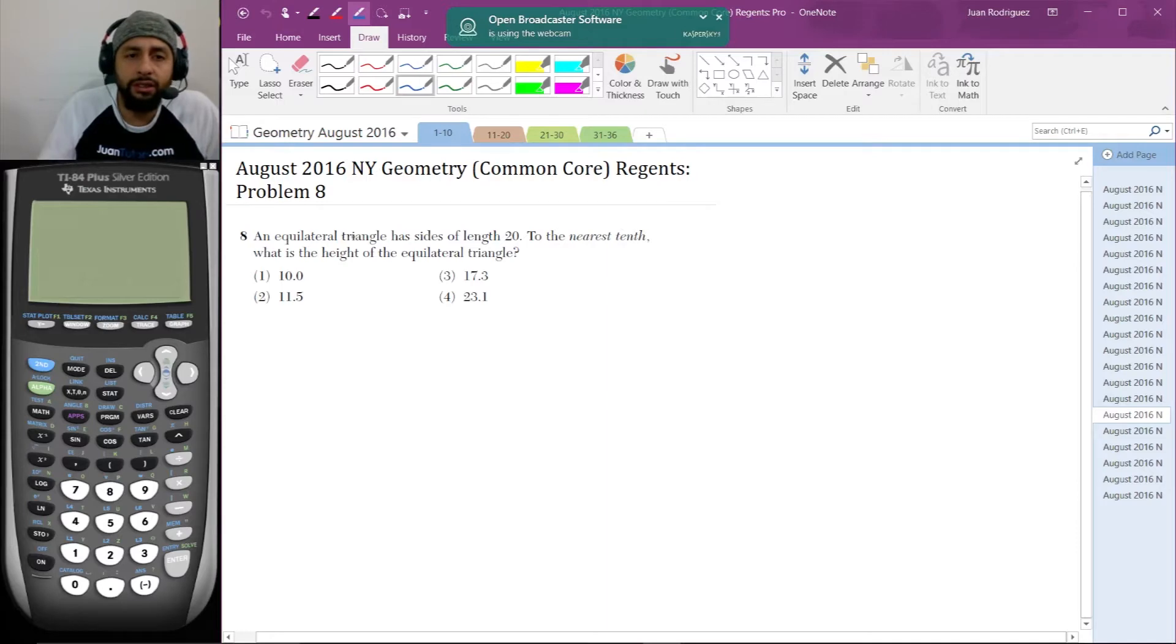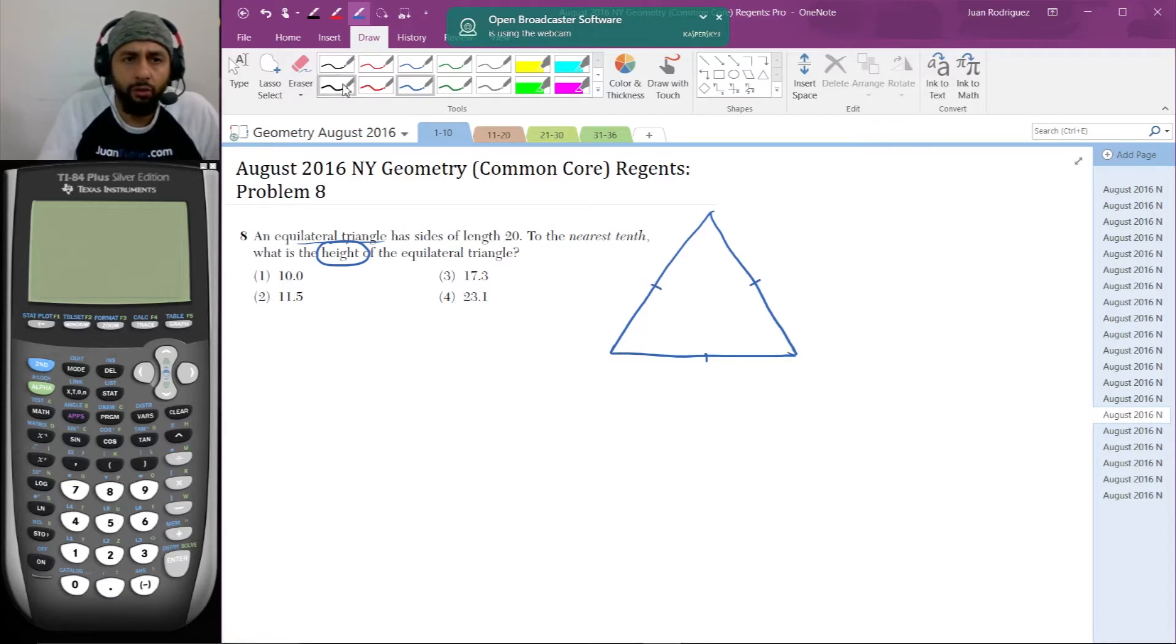This is to the nearest tenth and we want the height. It's an equilateral triangle. I always draw a diagram. Equilateral triangle means that all sides are congruent. We want the height, so we want the length of this height.